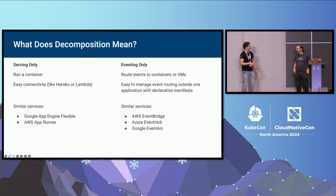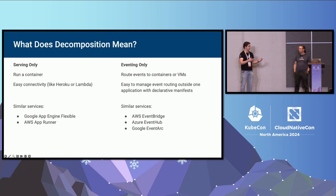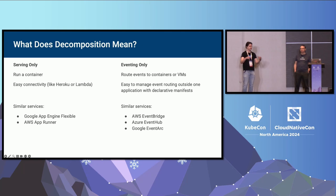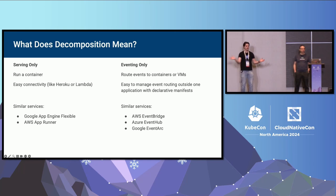With just serving alone, it runs a container for you — you don't need to worry about how to run the container on Kubernetes — and it gives you easy connections, like Heroku giving you a URL right away. Unlike vanilla Kubernetes where you need to create a Deployment, a Service, and align all the labels to get your endpoints working. It has all that scaling built in, so you don't need to attach an HPA or VPA onto your deployment.